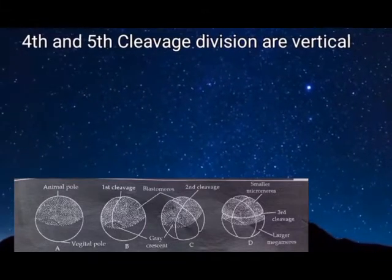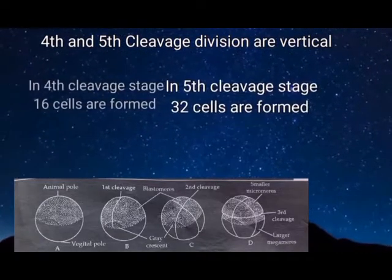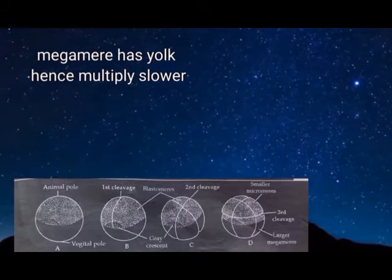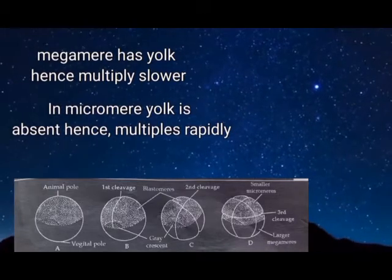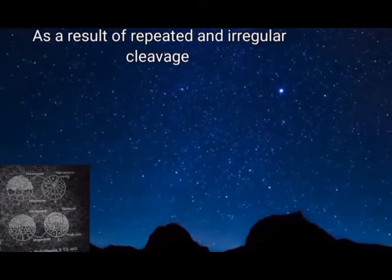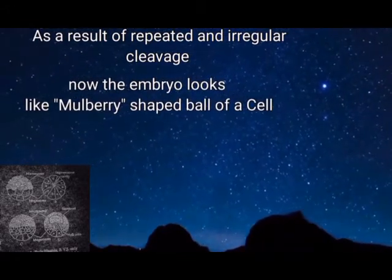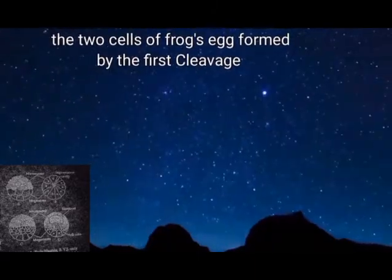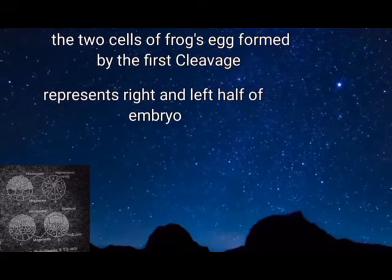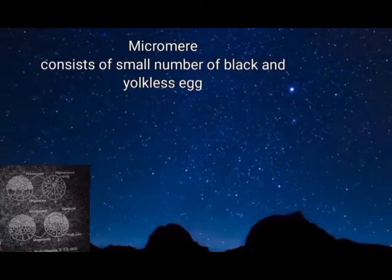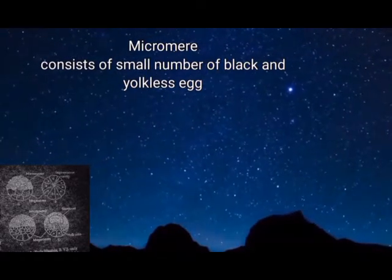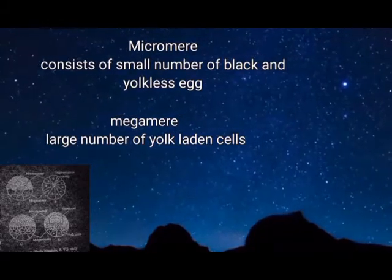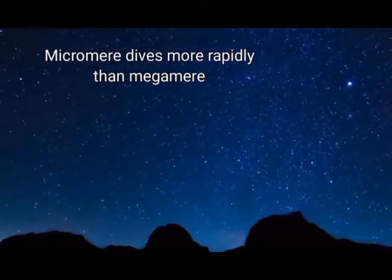The fourth and fifth divisions are again vertical, similar to the first and second, resulting in 16 and 32 cells or blastomeres. Megameres are yolk-laden cells that multiply more slowly, whereas micromeres lack yolk and multiply rapidly. As a result of repeated and irregular cleavage, the embryo looks like a mulberry-shaped ball of cells known as morula. One hemisphere of the morula is composed of small, black, yolk-less micromeres, and the other hemisphere is composed of large, white, yolk-laden macromeres.